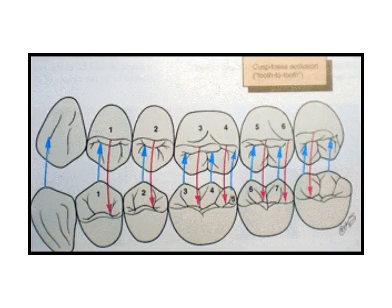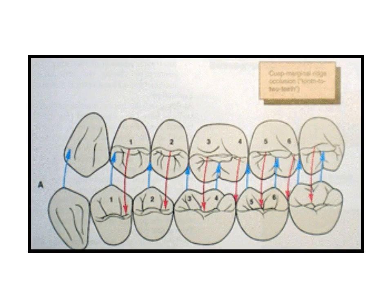Tooth-to-tooth cusp-fossa occlusion: mandibular functional cusps contact the opposing fossa. In tooth-to-tooth occlusion, the buccal cusp of the mandibular premolars and the mesiobuccal cusp of mandibular molars contact the embrasures of the maxillary teeth.